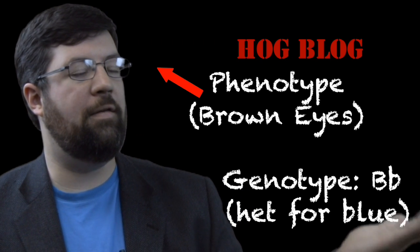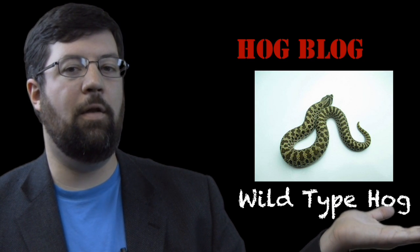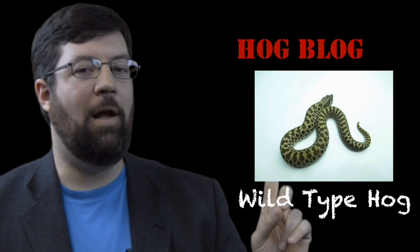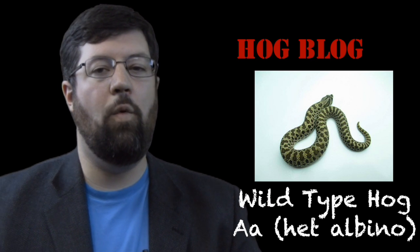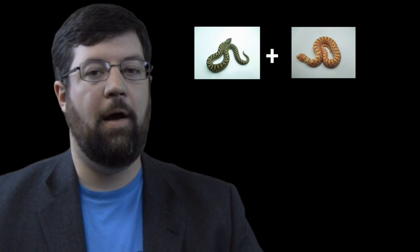So just to illustrate that example, here is a lovely normal hog-nosed snake. It's a wild type. It looks just like they do in the wild. But you can't tell by looking at her, but she is actually carrying one gene for albinism. So she can have albino offspring depending on who she breeds with.